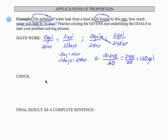So let's see how we would check this result. I've got 10 over 20 equals 120 over 240. I'm not including the units here in my check, just focusing on the numbers. 10 times 240 is 2400. 20 times 120 is also 2400. So the result of 120 gallons checks.